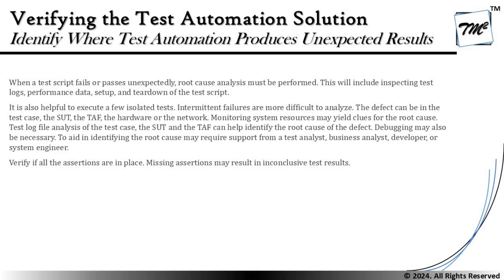To understand how we can identify these components, let's get into that. When it comes to test automation, it can produce unexpected results over time, and when a test script fails or passes unexpectedly, a root cause analysis must be performed. This will include inspecting test logs, performance data, and setup and teardown of the scripts. It is also helpful to execute a few tests in isolation, as intermittent failures are more difficult to analyze.